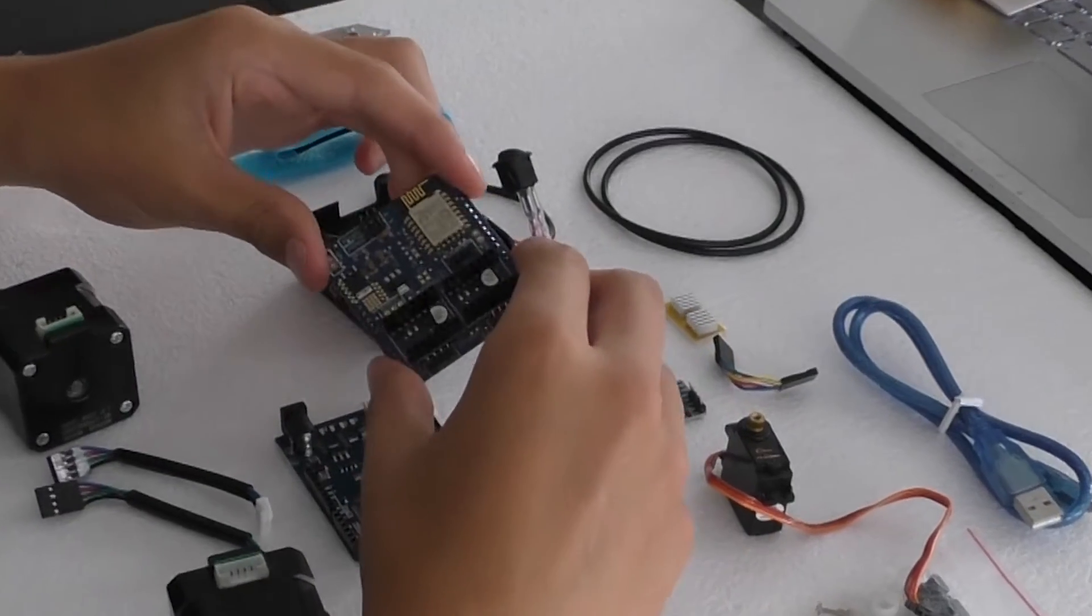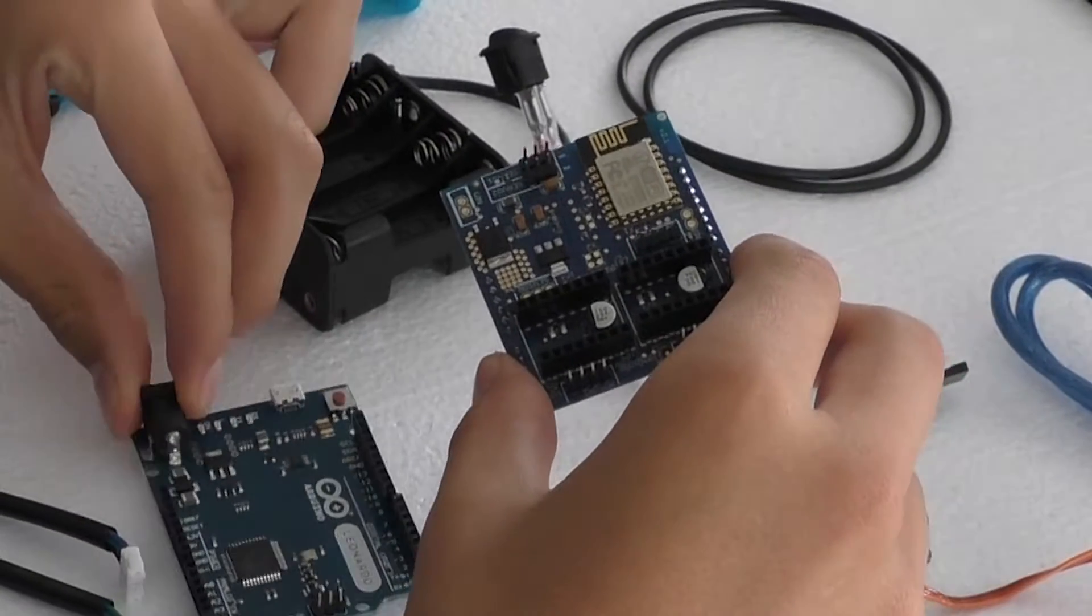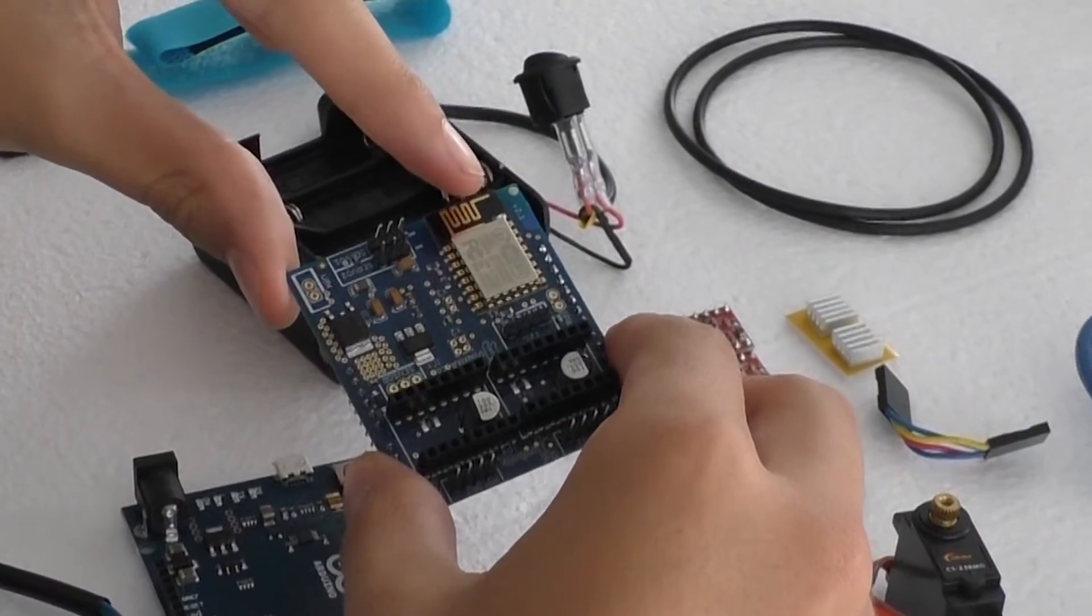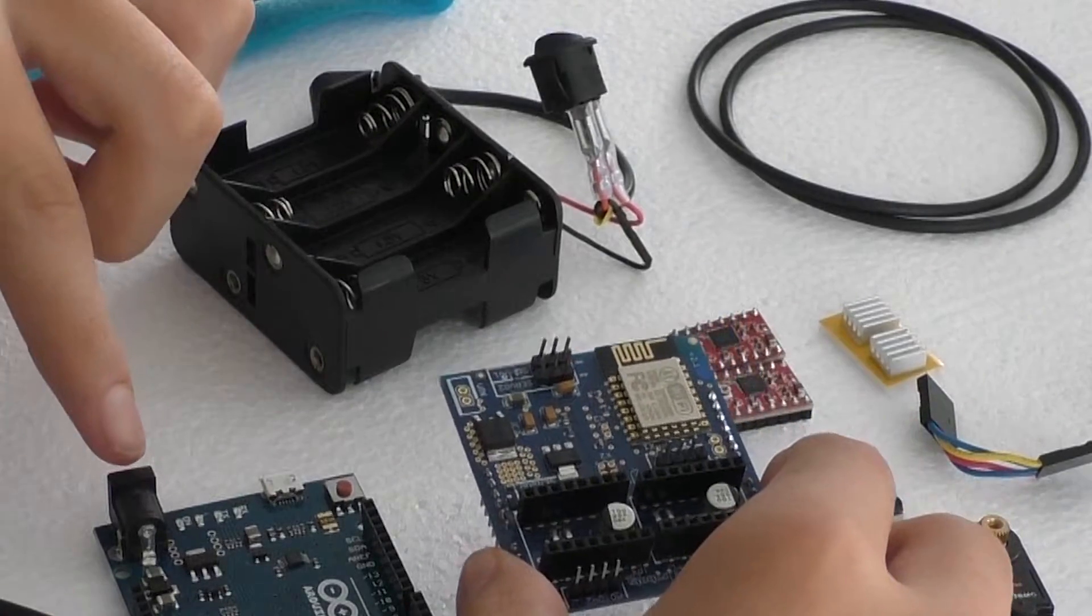First, we're going to attach the brain to the Arduino Leonardo. This is the WiFi chip. We need to make sure that this is closest to the power board.